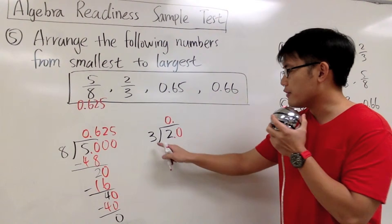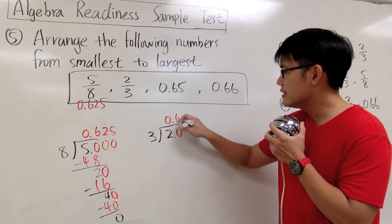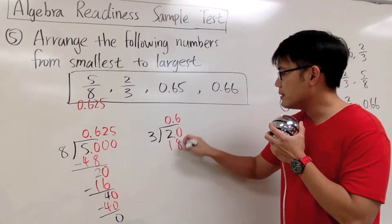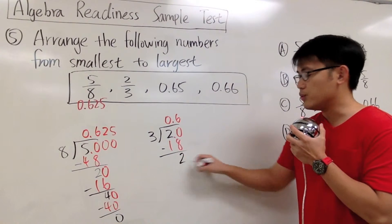And then we go ahead and ask ourselves, 3 goes into 20 how many times? The answer to that will be 6, 6 times. 6 times 3 will be 18. And we subtract. 20 minus 18, that will give you 2. And then we can continue from there.